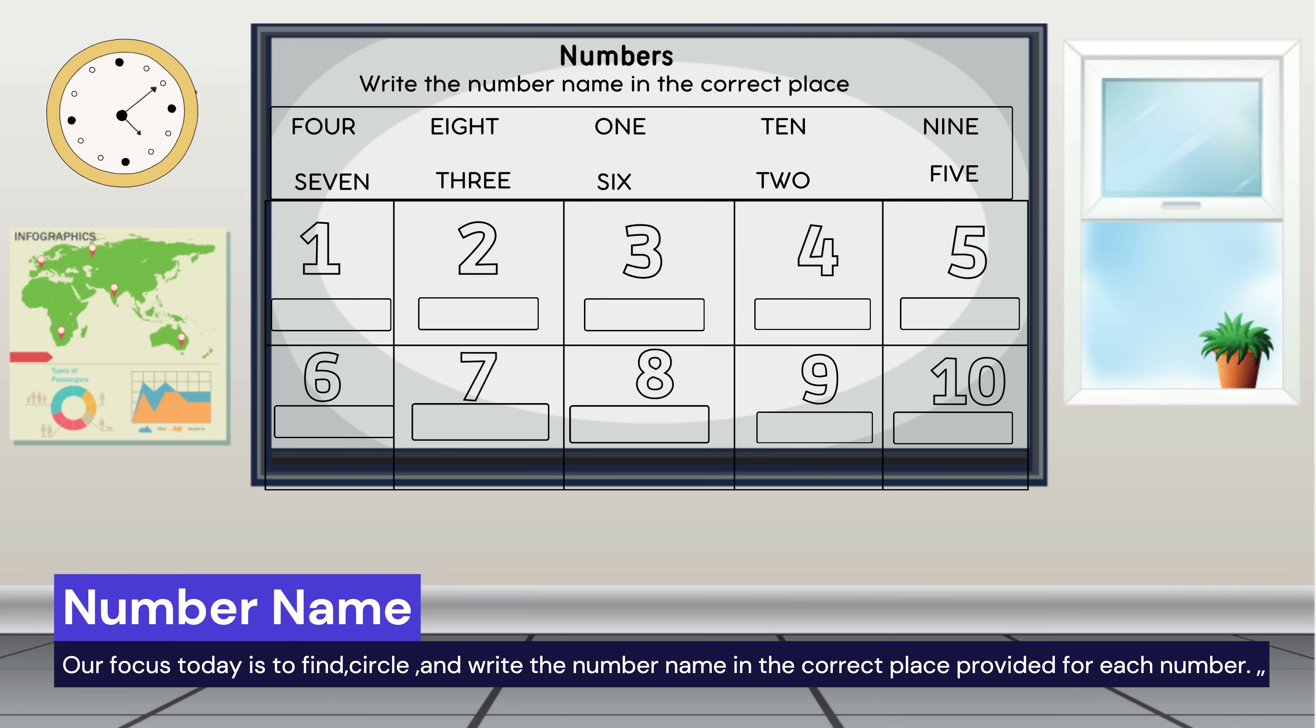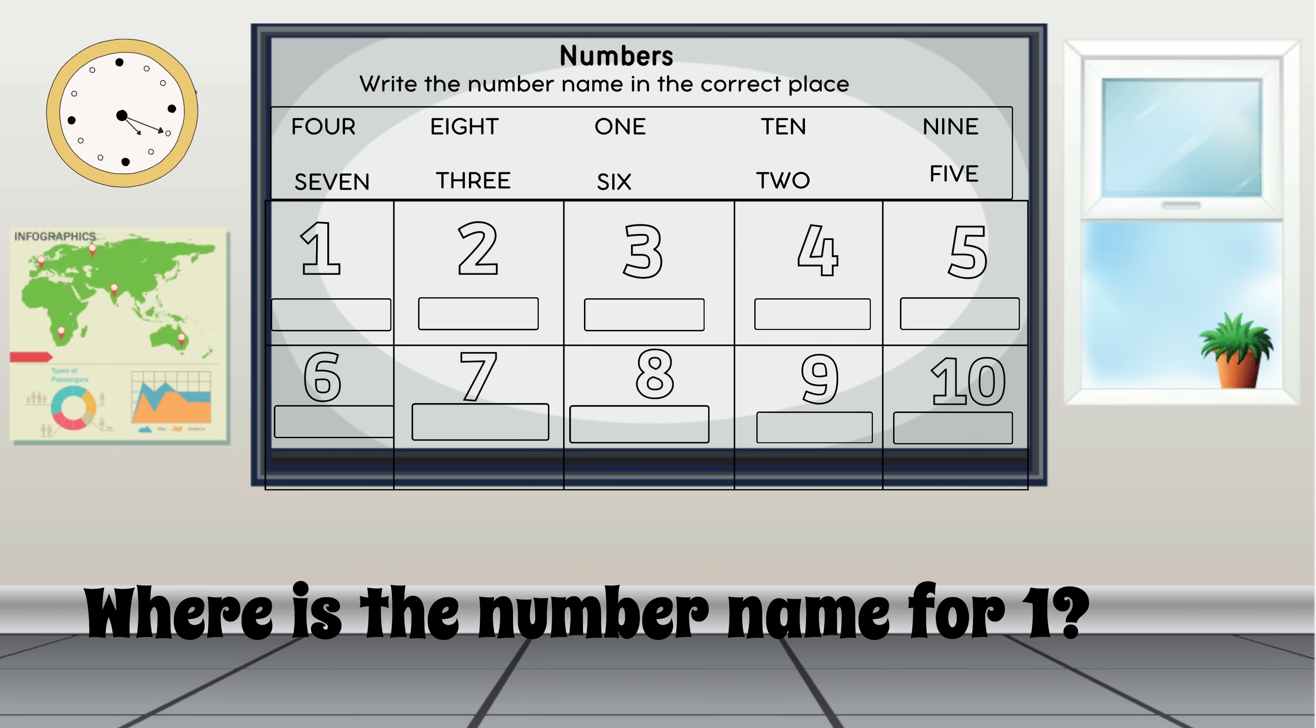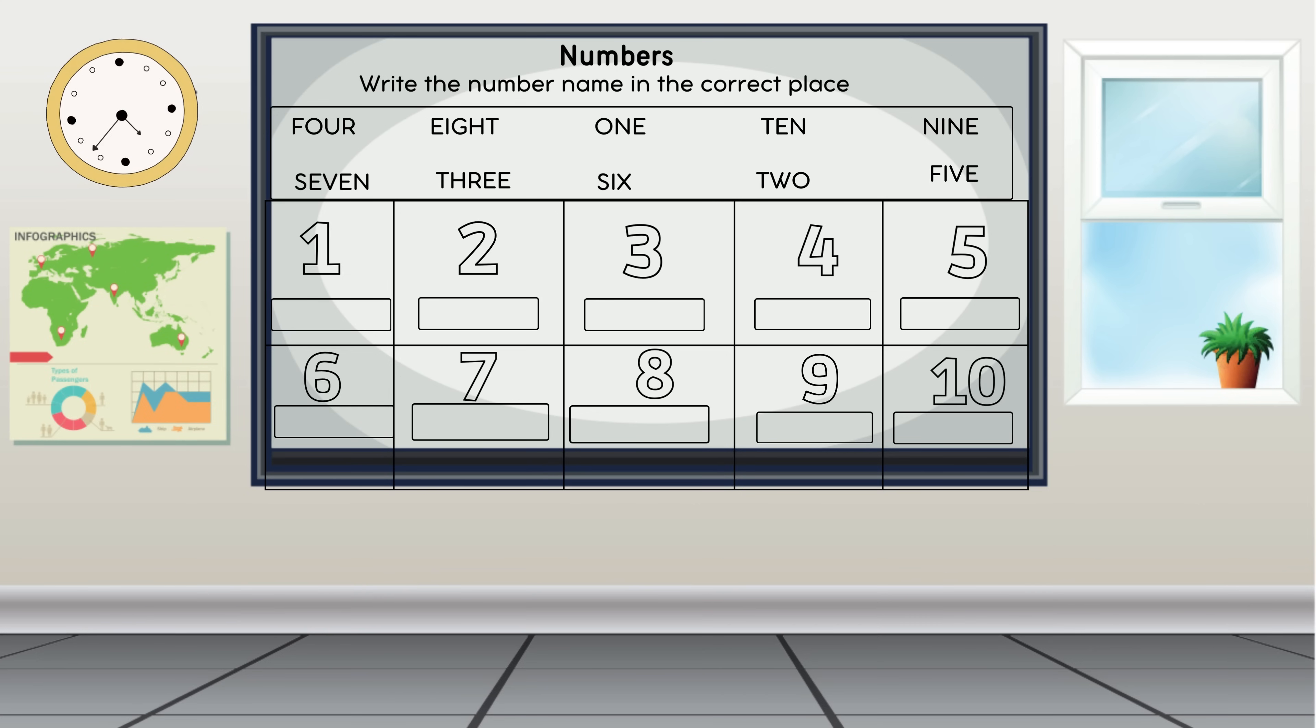Let's get started with the first number one. Let's find the number name for one. Look at the top of the worksheet to find the number name for one. Where is the number name for one? O-N-E, excellent. Let's spell one again: O-N-E.